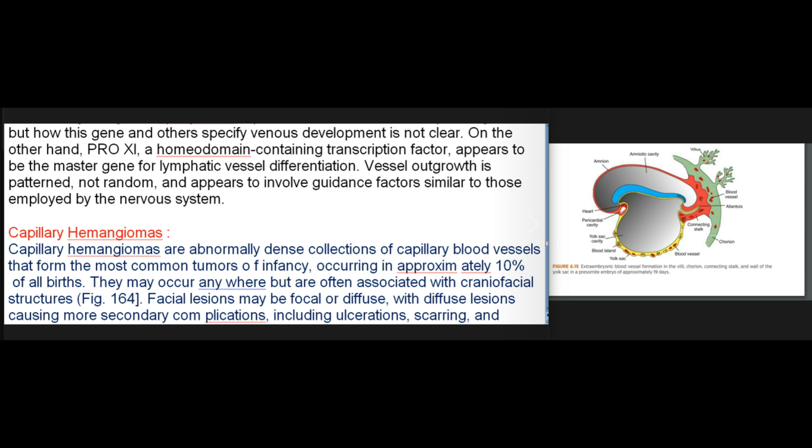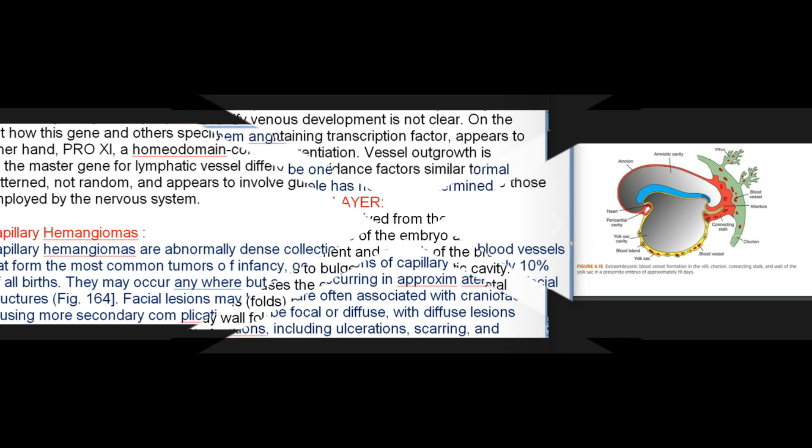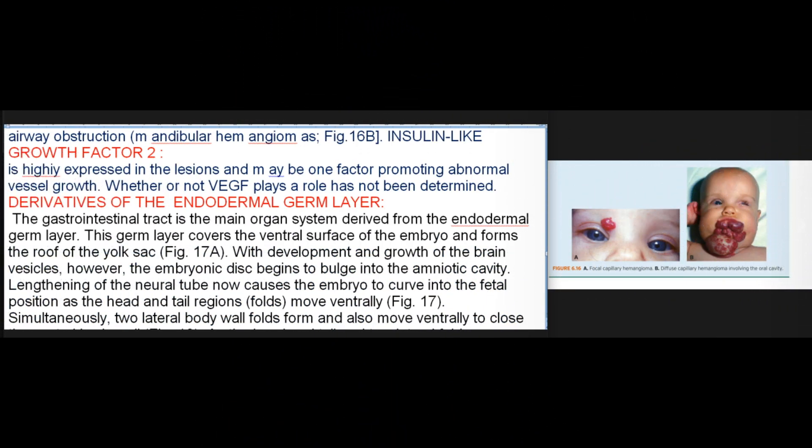Capillary hemangiomas are abnormally dense collections of capillary blood vessels that form the most common tumors of infancy, occurring in approximately 10% of all births. They may occur anywhere but are often associated with craniofacial structures. Facial lesions may be focal or diffuse, with diffuse lesions causing more secondary complications including ulcerations, scarring, and airway obstruction. Insulin-like growth factor II is highly expressed in the lesions and MIB1 factor promotes abnormal vessel growth. Whether or not VEGF plays a role has not been determined.